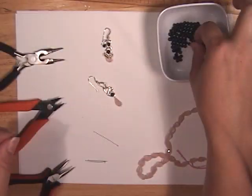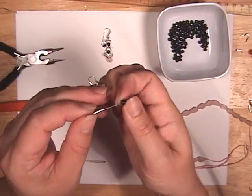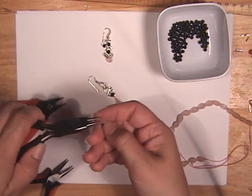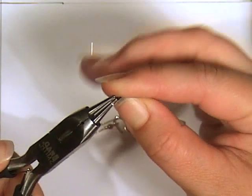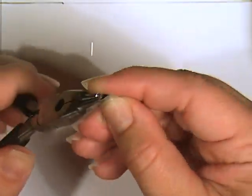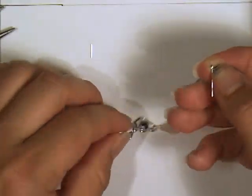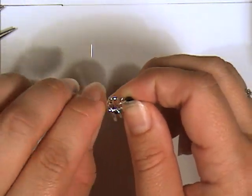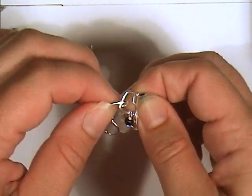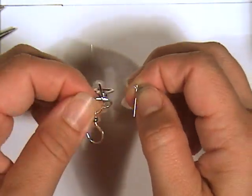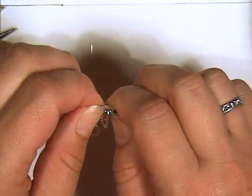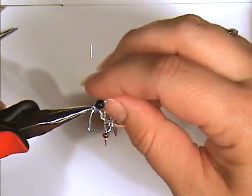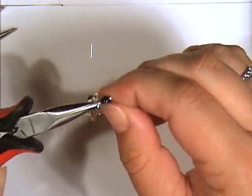Grab another head pin and another bead and go ahead and string that one too. And same as before with the round nose pliers, about 5 or 6 millimeters up, so you'll have a little bit of room once you roll in to put your coil. And we're going to take the top link, the link that's actually attached to the ear wire, and at the bottom of that link we're going to string that onto the loop we just made. Grab our chain nose pliers, go ahead and wrap it around.